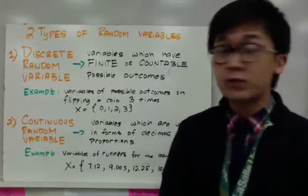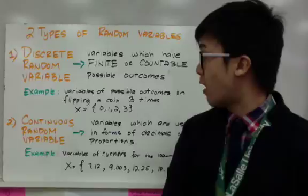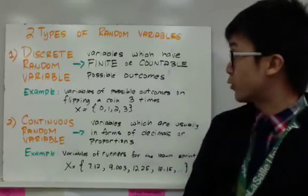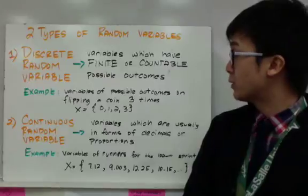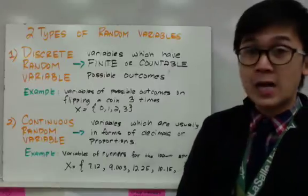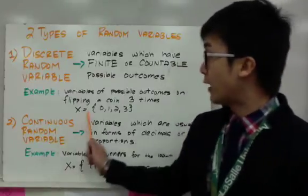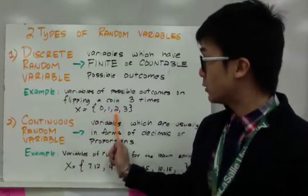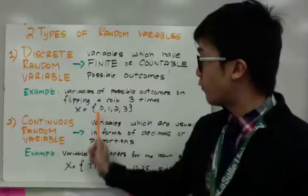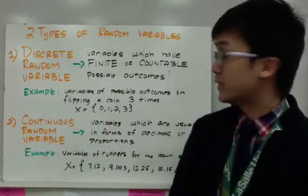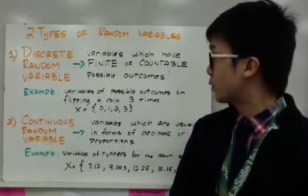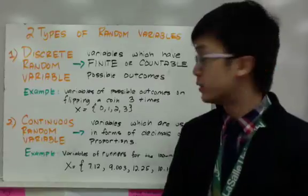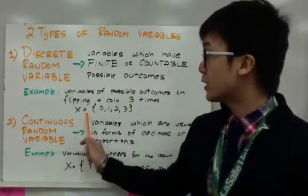Example of discrete random variable will be the variables on an experiment using coins. So let's say we're looking for the discrete random variables when you flip a coin three times. In this case, our x value for the discrete random variables will be 0, 1, 2, and 3. So these are the four discrete random variables when you flip a coin three times, and let's say we're focusing on tails for this particular event.